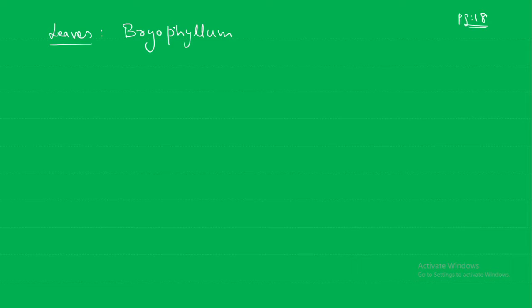When you look at figure 2.8, the name of the plant is bryophyllum — B-R-Y-O-P-H-Y-L-L-U-M. This bryophyllum leaf, even when still attached to the plant, roots will start forming from the leaf itself. They have buds known as adventitious buds.